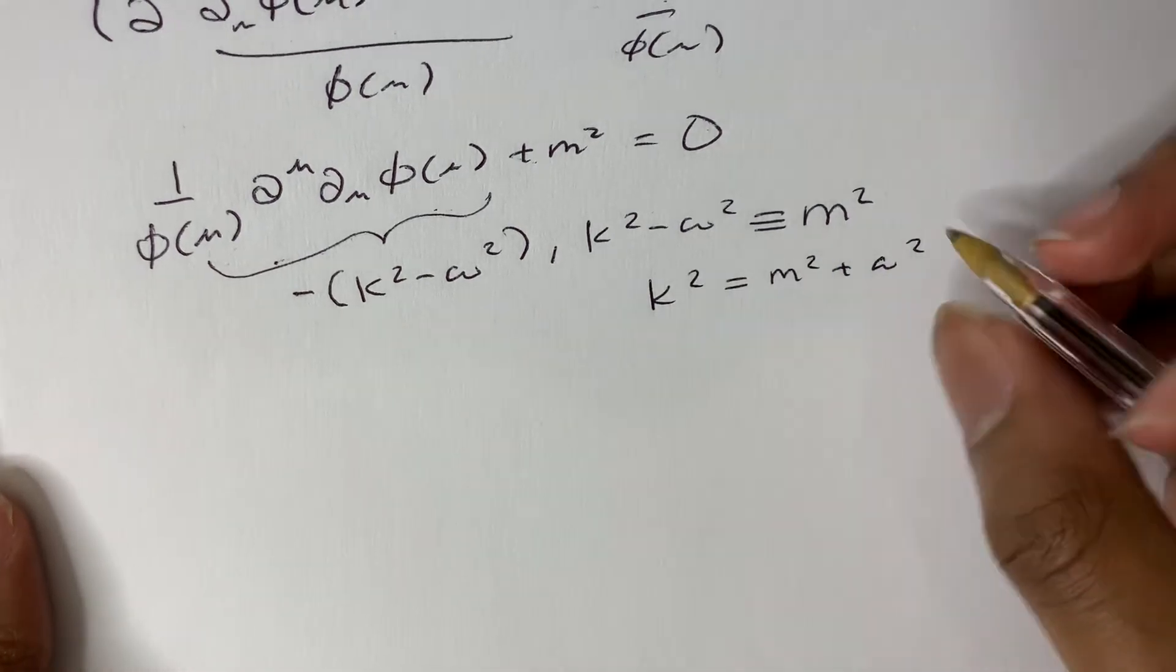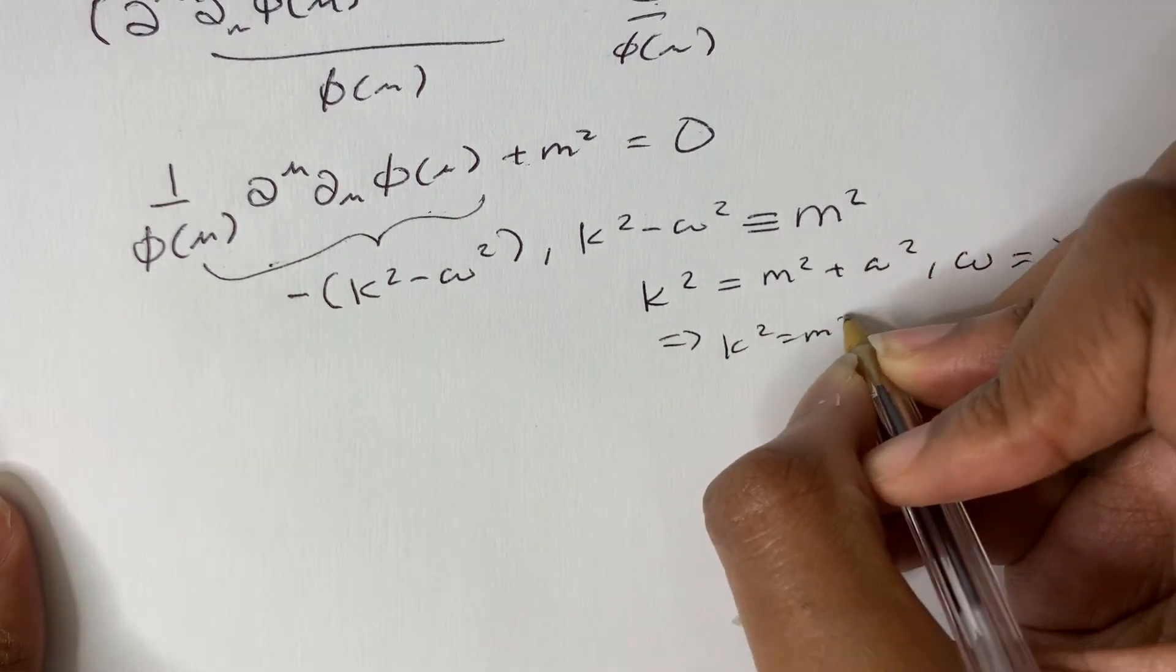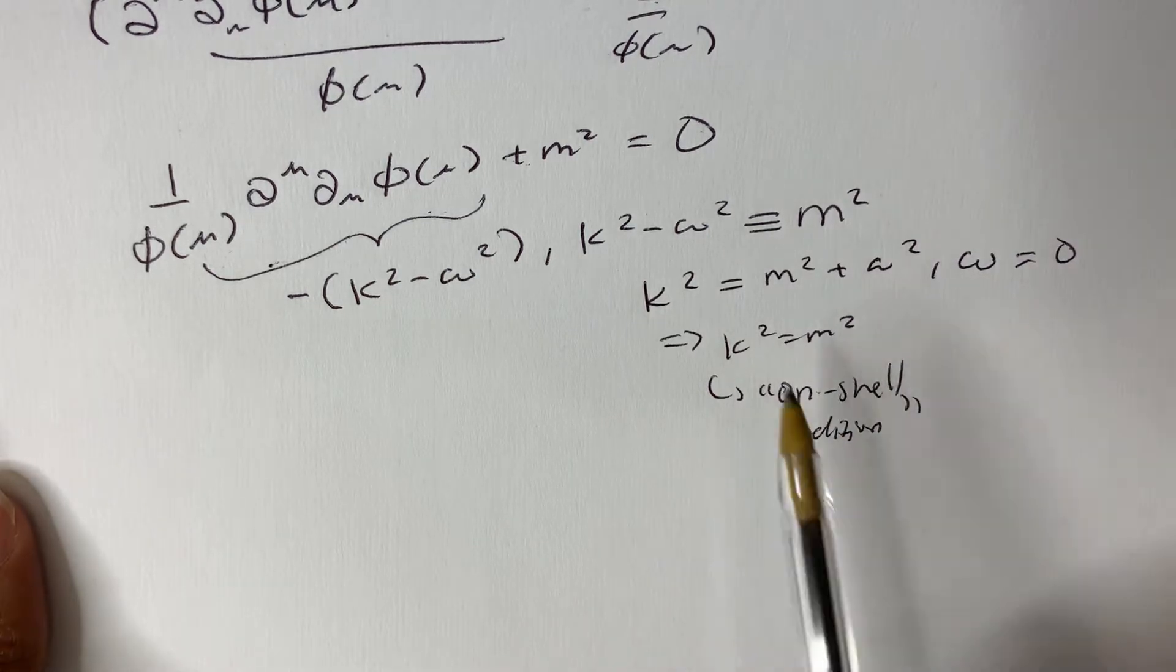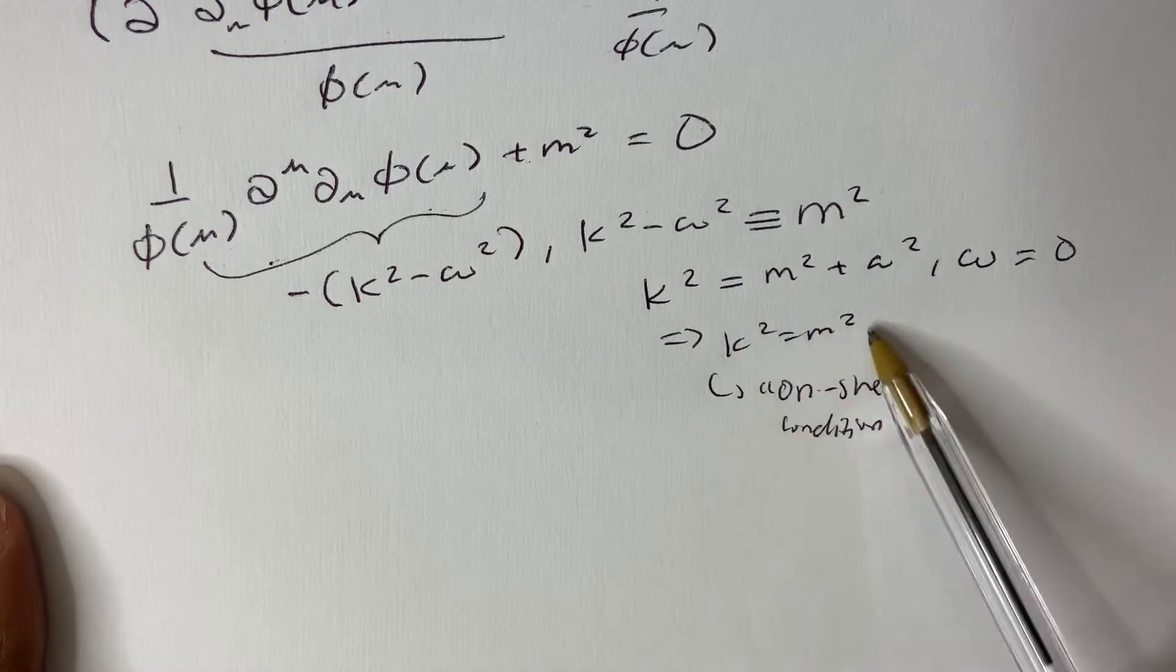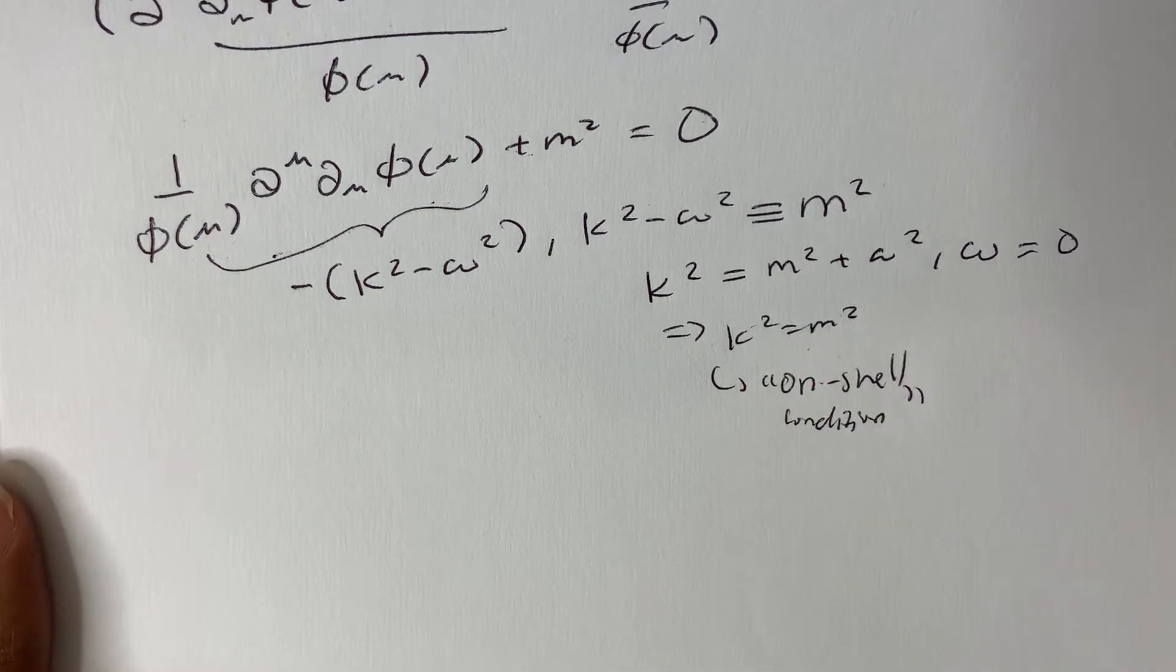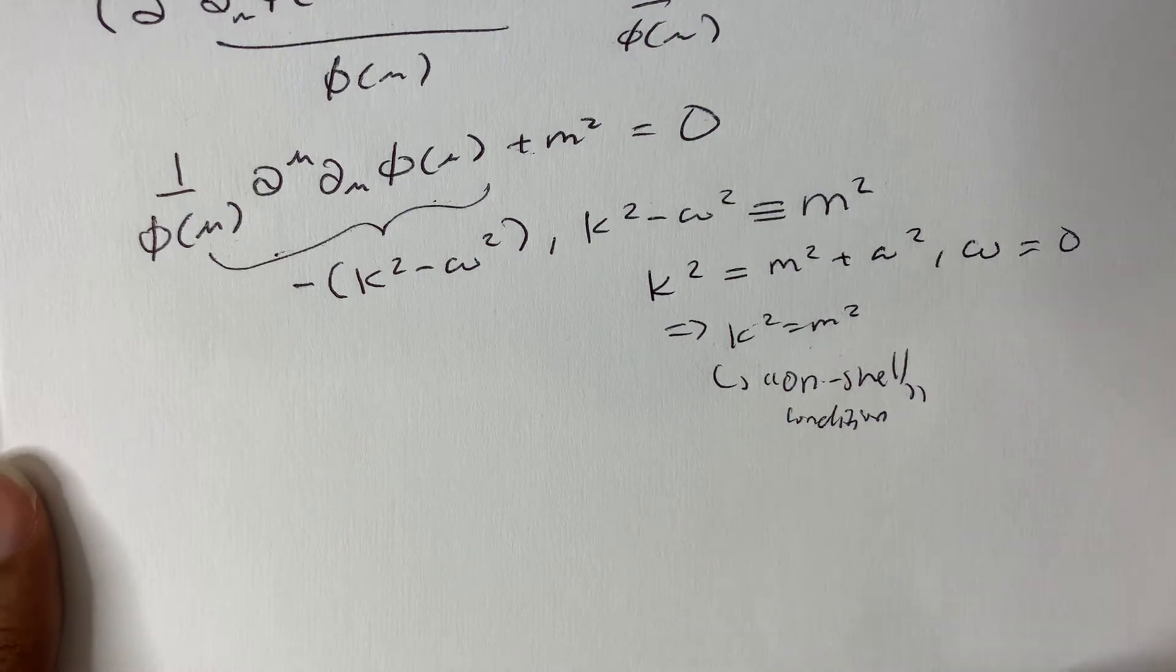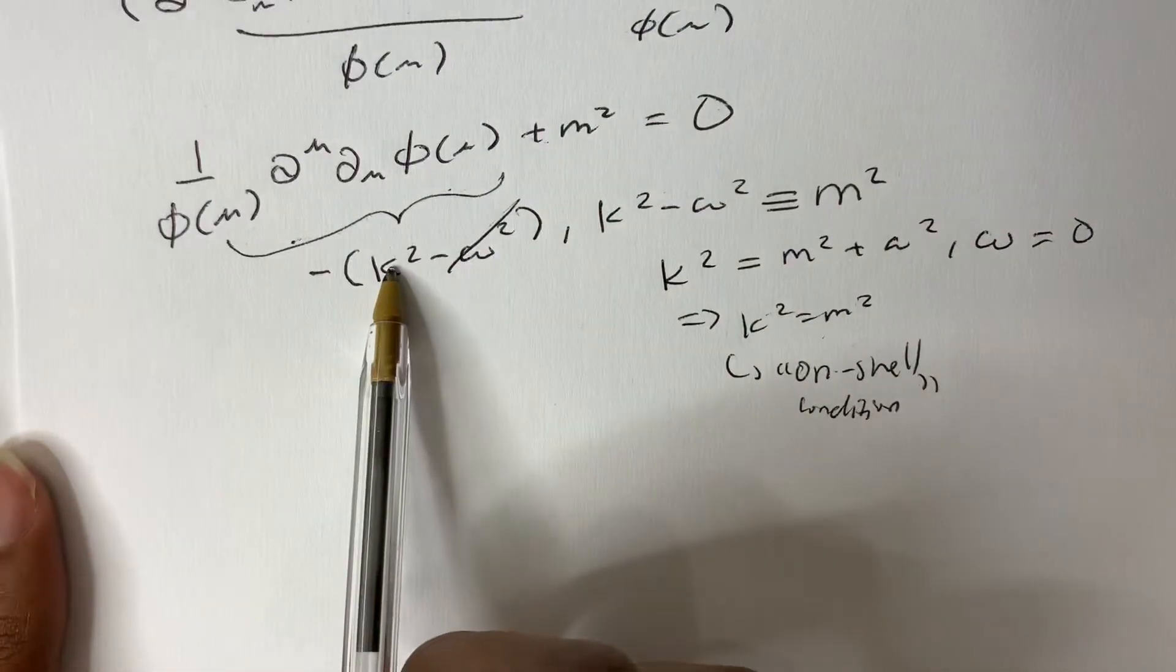But for now, these are just constants that we are dealing with. Now, we are going to deal with the case where omega equals 0. So k squared equals m squared. This is actually known as the on-shell condition, or the mass is on-shell. Because in the future video, this k is actually related to energy, and this is kind of equals mc squared in disguise. So for particles where energy is conserved, k squared will be m squared. So that's why we impose omega is 0. This is now just minus k squared.